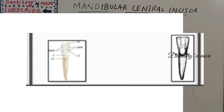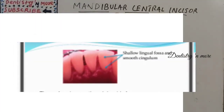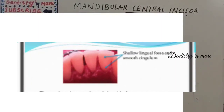The lingual aspect is concave from the incisal edge to the cervical line. The cingulum is smooth and barely visible, and there is a shallow lingual fossa. The surface is smooth without any grooves. No other tooth in the mouth except the mandibular lateral incisor shows so few developmental lines and grooves, so there are not many features on the mandibular central incisor.